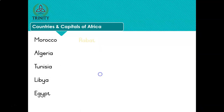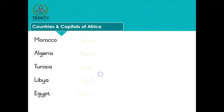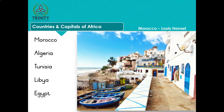Morocco - Rabat. Algeria - Algiers. Tunisia - Tunis. Libya - Tripoli. Egypt - Cairo. And there we go - that's a photo of the coastline in Morocco. It looks so colourful and beautiful.